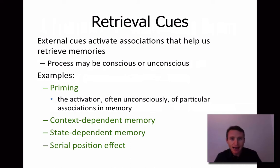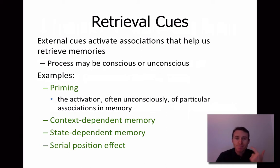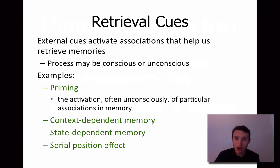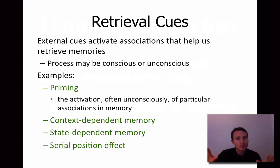Memory is prompted by something in our environment, typically. External cues activate associations that help us retrieve memories. For example, when you see your friend's face, that might actually retrieve the memory of their name. There are things around us that prompt memories — those are called retrieval cues. And these can be conscious or unconscious. I want to focus on just a few examples to look at the diverse array that are all around us.